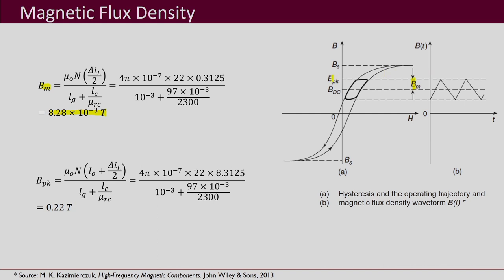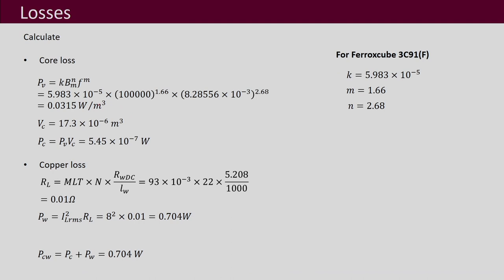We also need to know B_peak — the maximum flux density — to ensure it is less than the material's maximum flux capability. Substituting into the B_peak equation, we obtain 0.22 tesla, which is less than the 0.25 tesla specified at the beginning. So our design is acceptable in that respect, and we then calculate core losses.